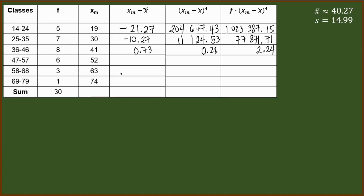Next, we have 52. 52 minus 40.27, we have 11.73. Fourth power of that will give us 18,931.81. Times 6, we have 113,590.86.